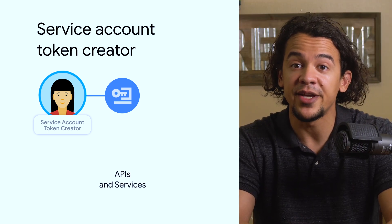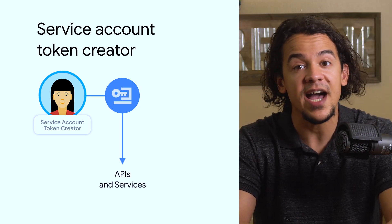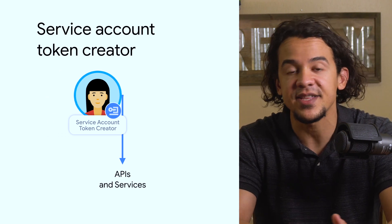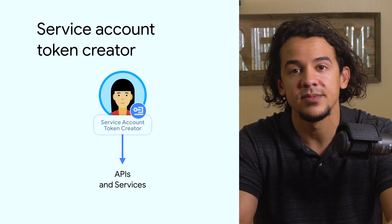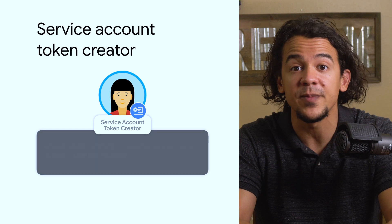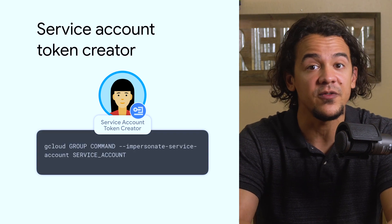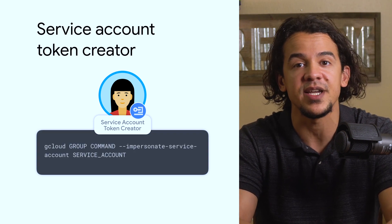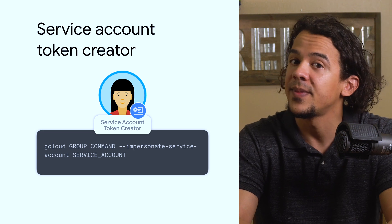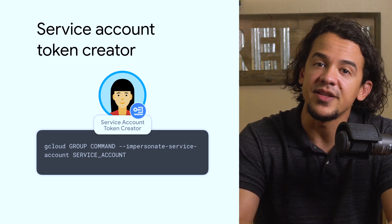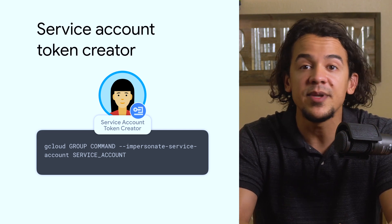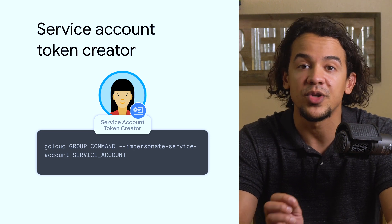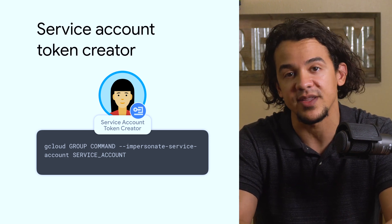For example, they can generate an OAuth 2 access token for the service account to access the Google Cloud REST API as a service account. Additionally, a user of this role can use the `--impersonate-service-account` flag on any gcloud command to run it as a service account — no keys required. Depending on your organizational needs, you could reduce or even eliminate the use of service account keys and, in effect, reduce the attack surface of your project.